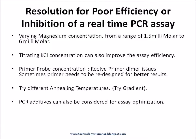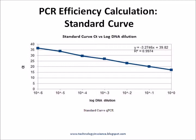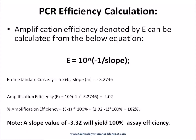Following these steps should bring the real-time PCR assay efficiency to within the range of 90% to 105%. Note that a 100% assay efficiency yields a standard curve slope of minus 3.32. The real-time PCR assay efficiency can be calculated using the corresponding formula.